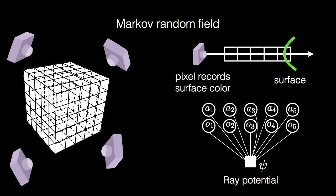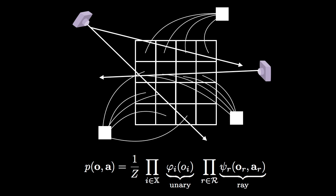Each input pixel adds a constraint to our model. The color of the first occupied voxel along the ray should match the pixel color. High-order ray potentials defined over the occupancy and color variables along the ray are used to penalize deviations from this constraint.